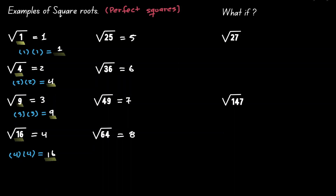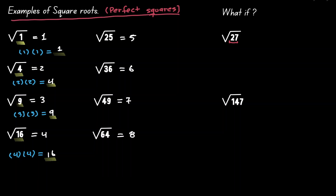But now, what if we encounter values that are not so easy to find the square root of? Can we think of a number that if we multiply itself 2 times, gives us the value inside the square root, which is 27? It's not as easy as the ones we just discussed. So what do we do? We need to think about how we can simplify the inside of the square root — specifically, can we write that number as a multiple of values whose square root we do know, which we've defined as perfect squares.